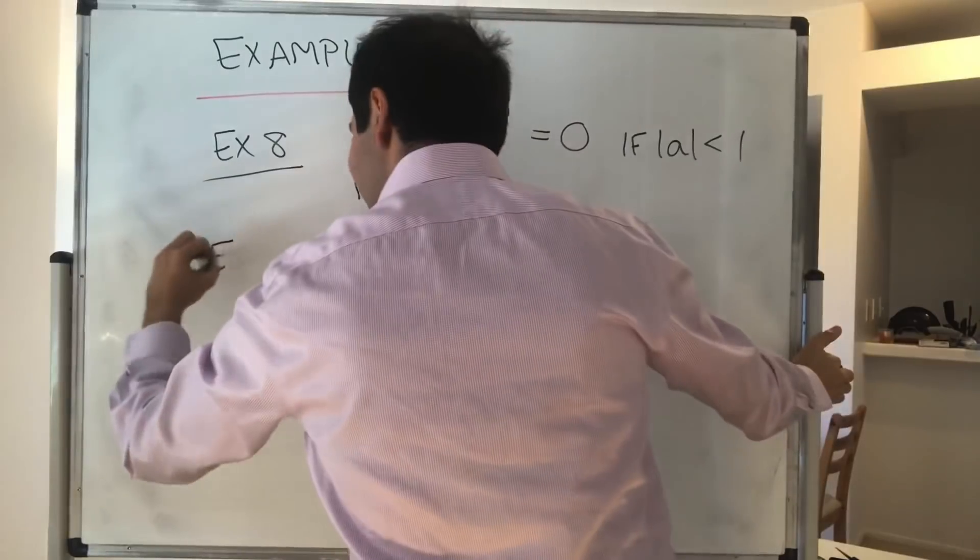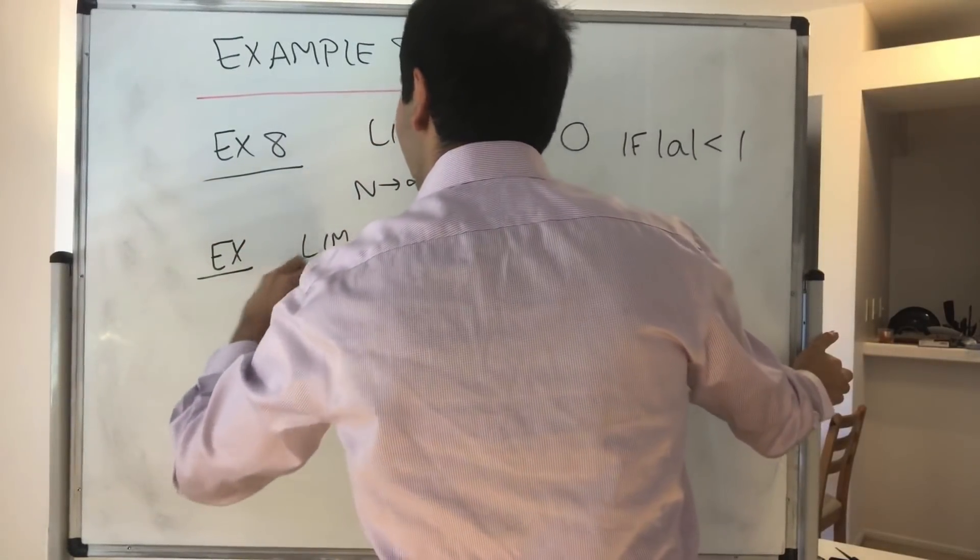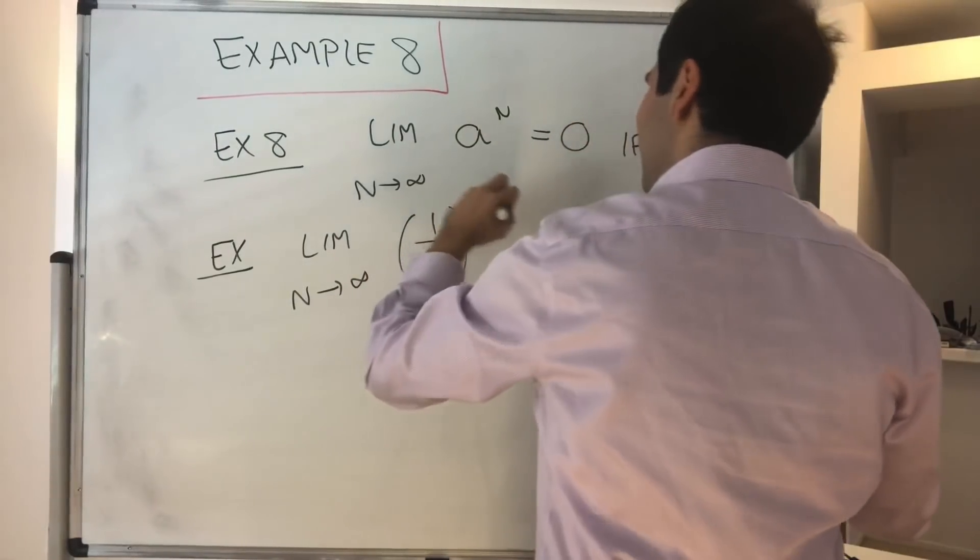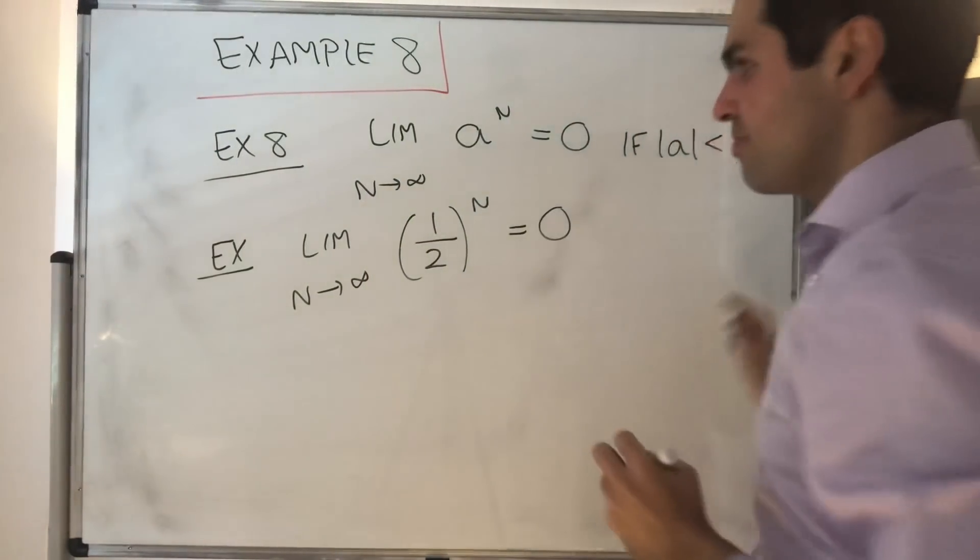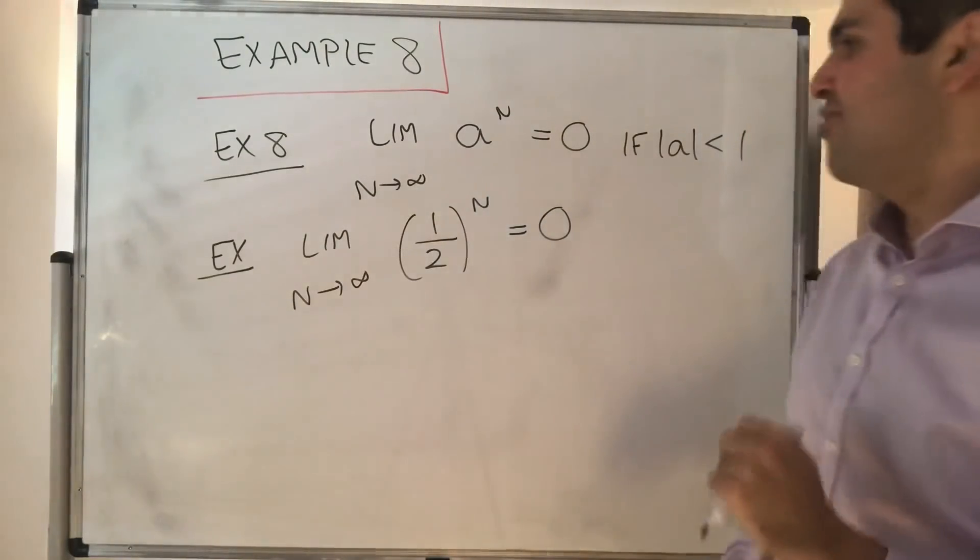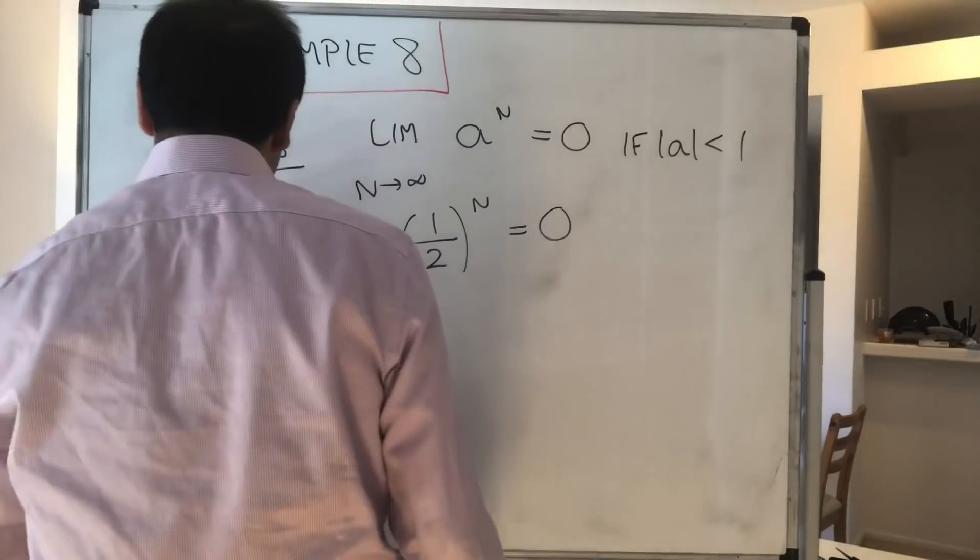For instance, after this video, you'll be able to say with confidence, I know that one half to the n converges to zero. And the proof is absolutely clever and beautiful. You'll see. So in fact, let's start with it.